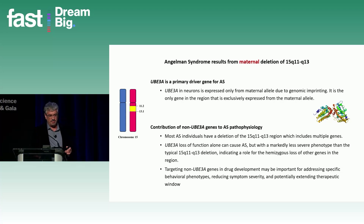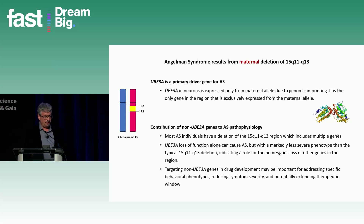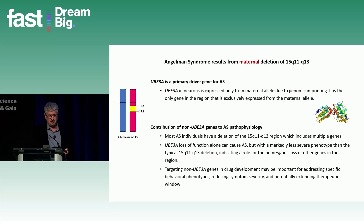A lot of current drug development efforts are focused on UBE3A reinstatement, which is a very exciting and important area. But we're doing research that may be important for the next generation of Angelman therapeutics that exploit the roles of these other genes. I'm on board with the suggestion that another pillar of Angelman therapeutics should be the role of these non-UBE3A genes — they may address specific phenotypes, reduce overall symptom severity, and potentially extend the therapeutic window.